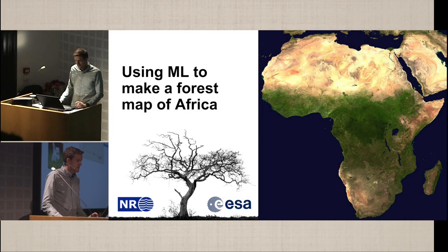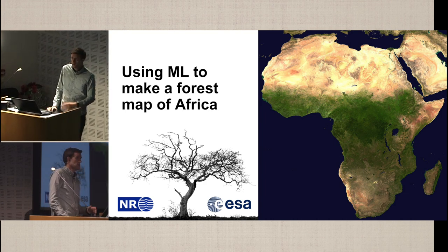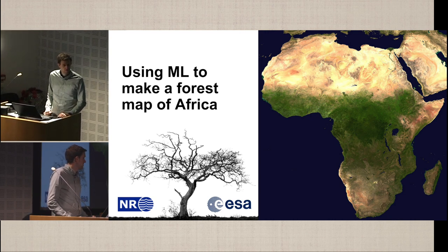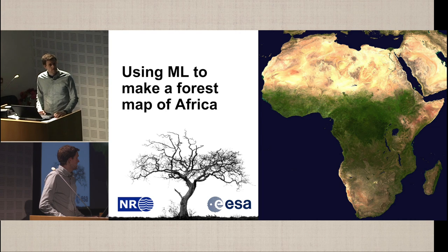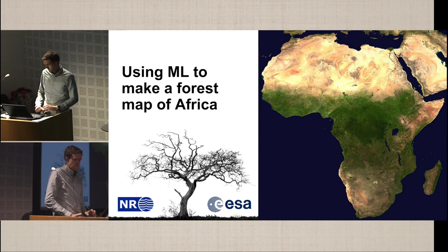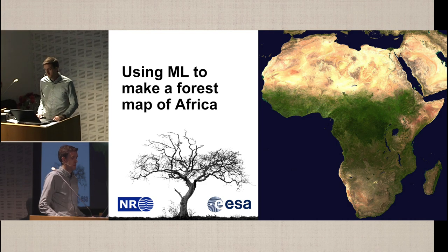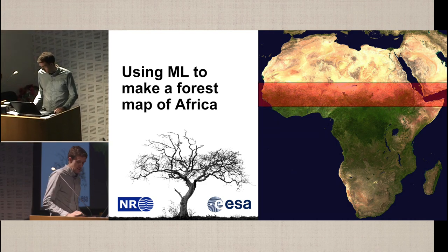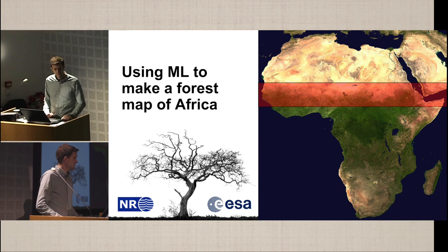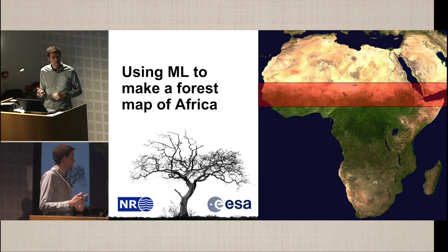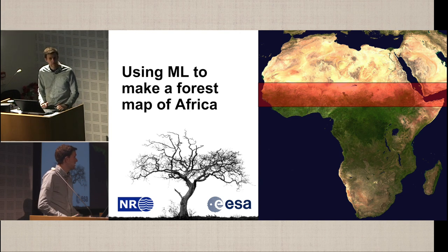I'll go into detail on how we can use this with an example. This was from a project at the Norwegian Computing Center together with the European Space Agency. They asked us to demonstrate deep learning for satellite images, so we decided to make a forest map of Africa with forest height, focusing on the Sahel region — the area across the southern border of Sahara — and the Great Green Wall initiative to plant a belt of forest across Africa.